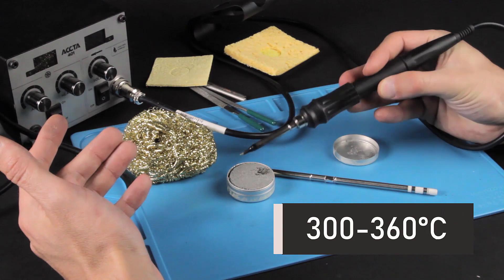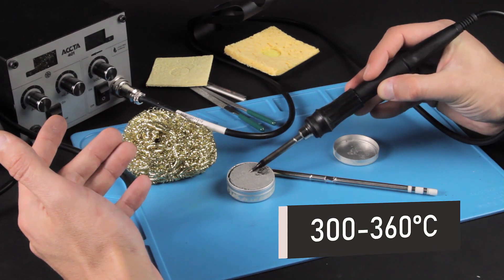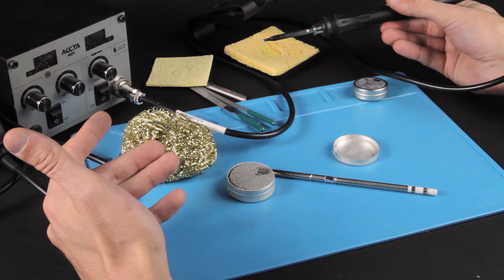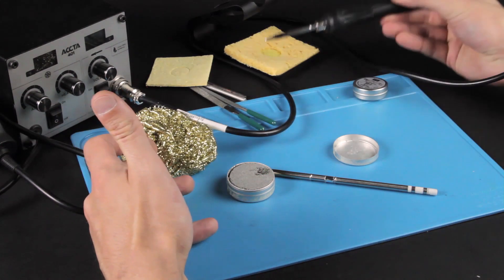Heat up the tip to 300 to 360 degrees Celsius and stick it into the refresher for several seconds. Then, tin plate the tip and wipe the dirt away using brass wool or a sponge.